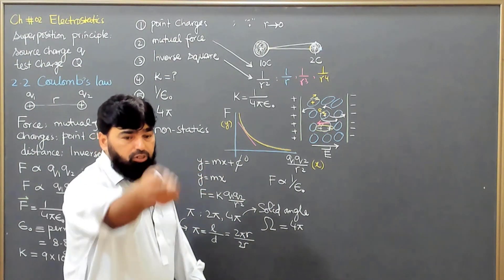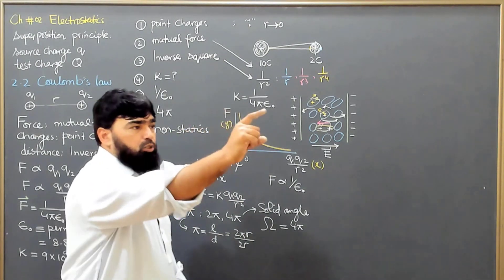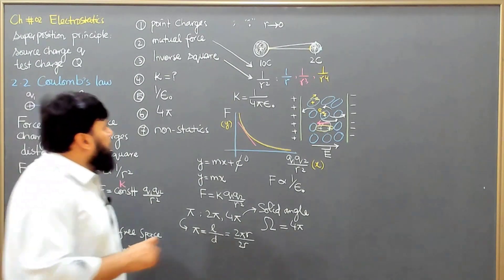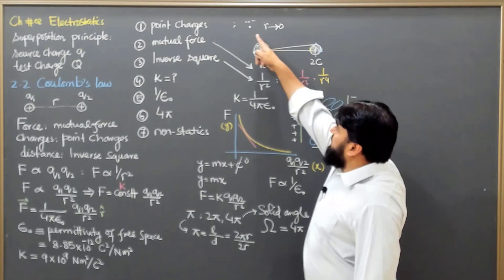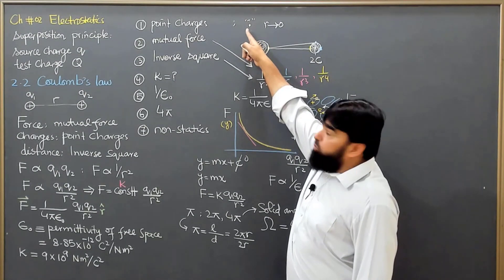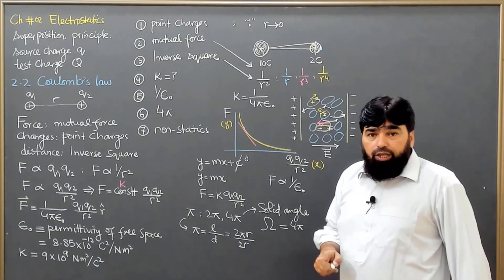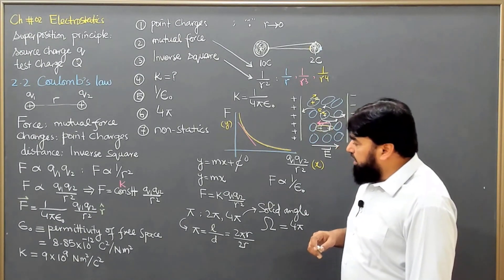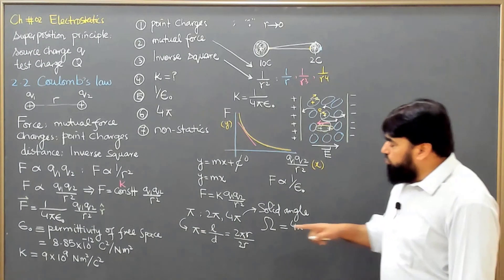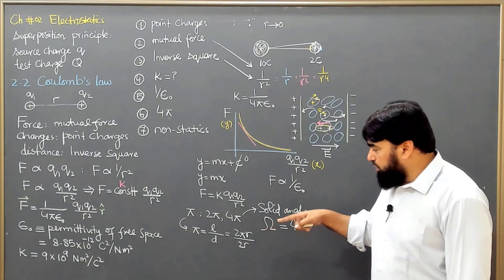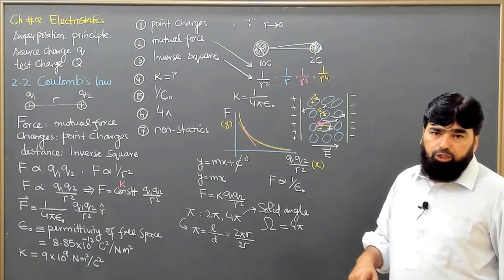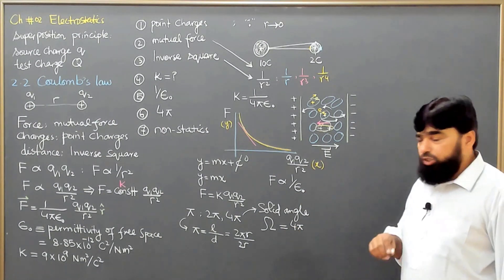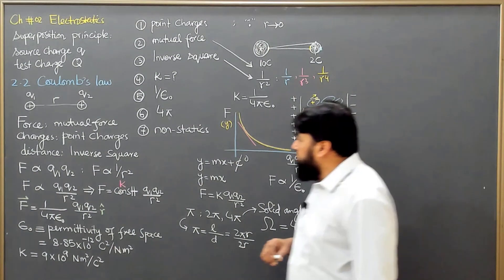So when we consider point charges, a point is a sphere, and when one point charge is seeing the other point charge, it is seeing it as round. That's the reason — which we will cover clearly in Gauss's law — that this is actually due to the spherical nature of the charges. This three-dimensional angle is involved there, and for that reason we have 4pi in Coulomb's law.